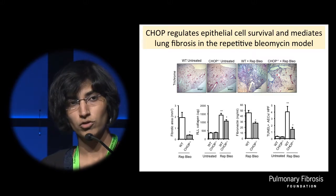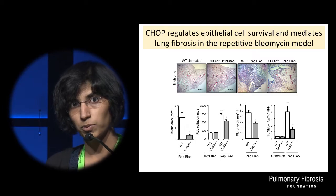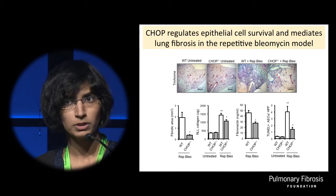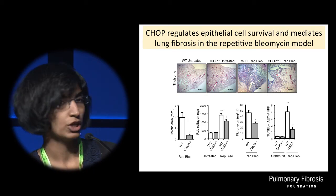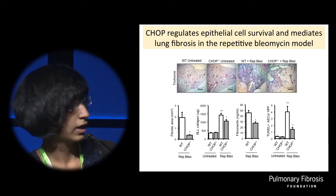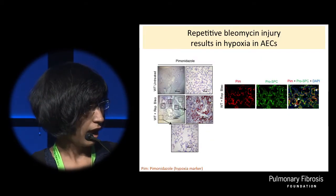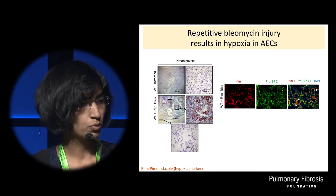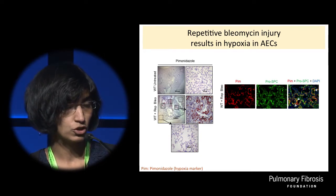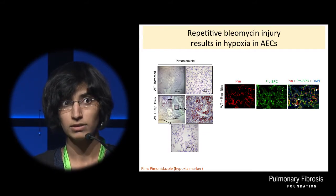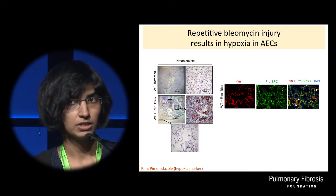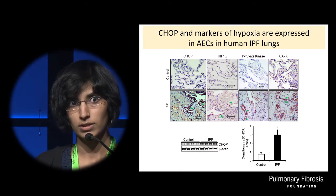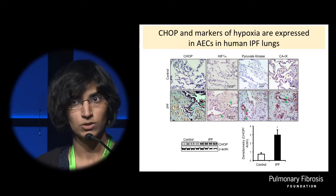We wanted to understand the role of CHOP in this model, so we compared wild-type mice with CHOP knockout mice. CHOP knockout mice given repetitive bleomycin were significantly protected from fibrosis, as shown by morphometry and by quantification of collagen and fibronectin. Apoptosis of type 2 AECs is a critical event in lung fibrosis, and we found that CHOP-deficient mice were significantly protected from apoptosis of AECs as well. These data suggest that after repetitive bleomycin-induced injury, ER stress effector CHOP kills type 2 AECs and augments fibrosis.